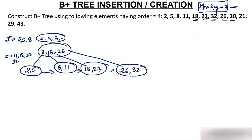Now insert 20. Where does 20 come? 20 comes between 18 and 22. Then insert 21. Where does 21 come? 21 would come here between 20 and 22, but the node is already at maximum capacity. So it splits — the middle in right bias is 21. So 21 goes up to the parent.